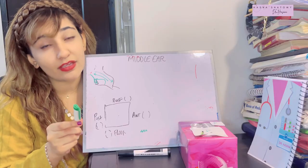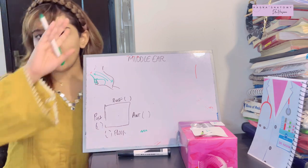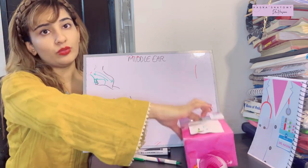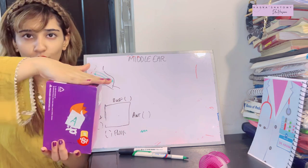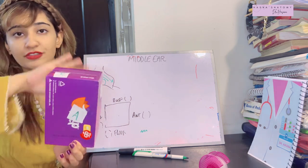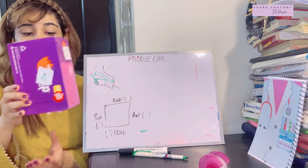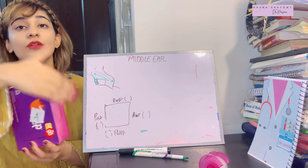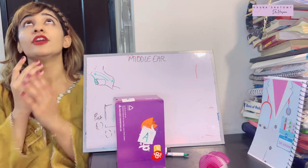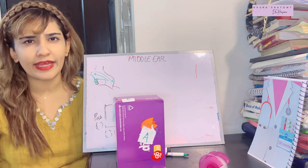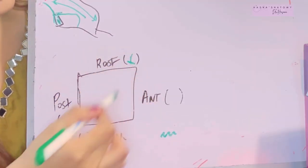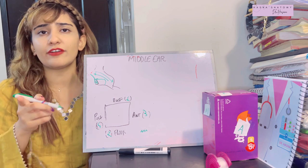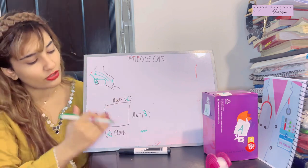The middle ear cavity can be imagined as a cube with a roof, floor, anterior wall, posterior wall, medial wall, and lateral wall. Here's a mnemonic: if you look up there is one God, if you look down there are two legs — so the roof has one content, the floor has two, the anterior wall has three, and the posterior wall has four contents.